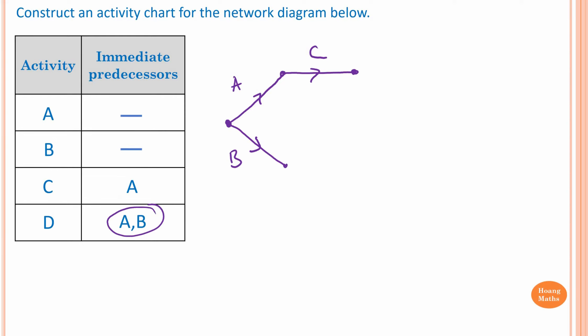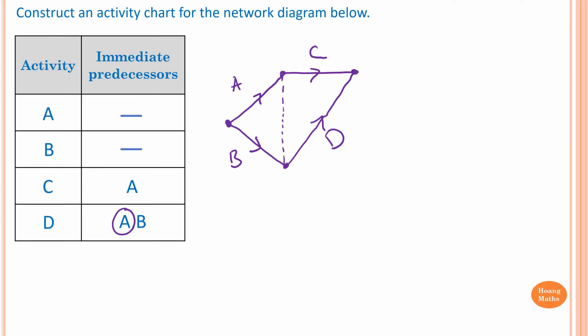For Activity D, A and B are immediate predecessors. So we start from B and draw the network together — this is Activity D. Activity A is also an immediate predecessor of D, but you cannot draw a solid line directly, because there is no activity between A and D. So in order to connect these two, we need to draw a dotted line showing direction — this is called a Dummy Activity.